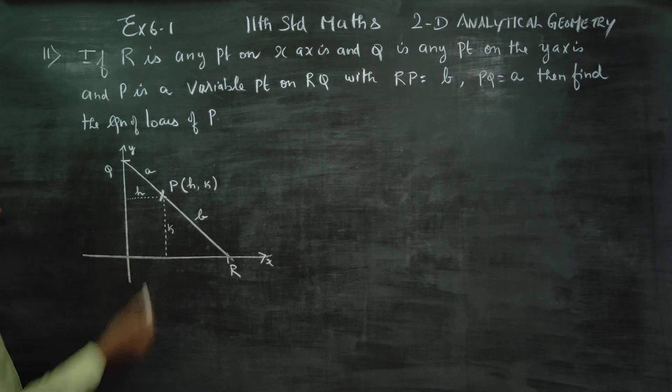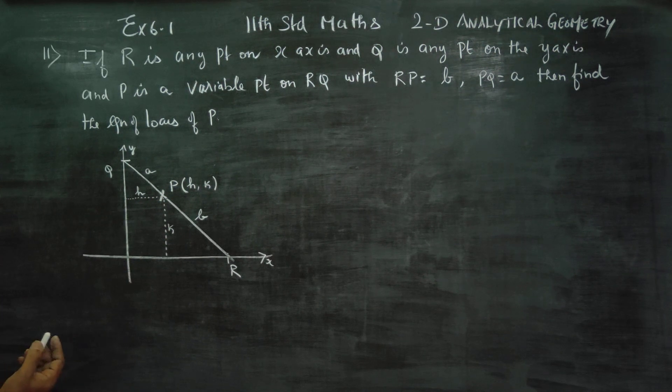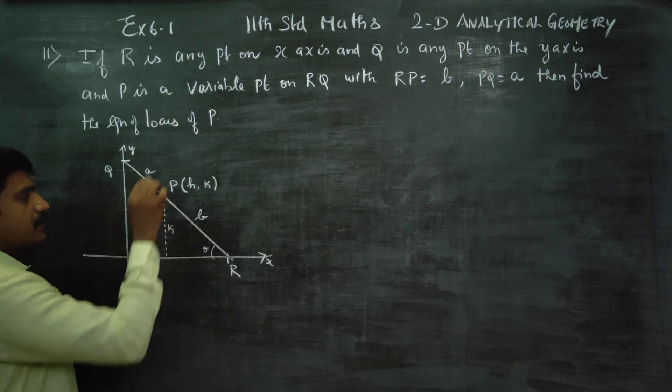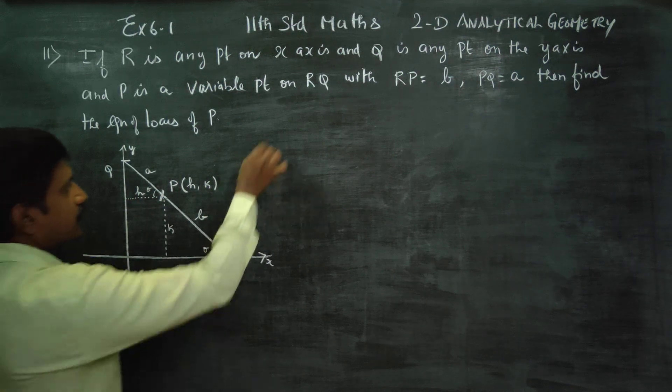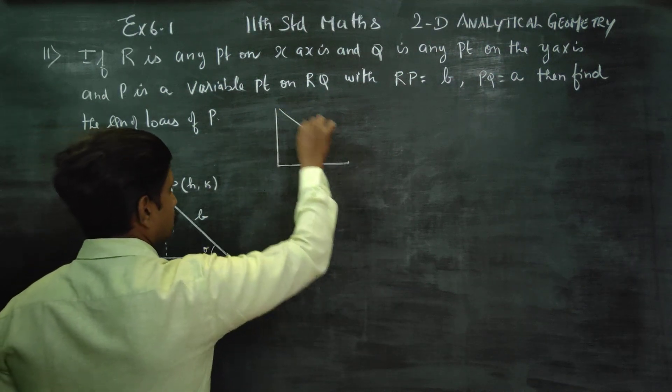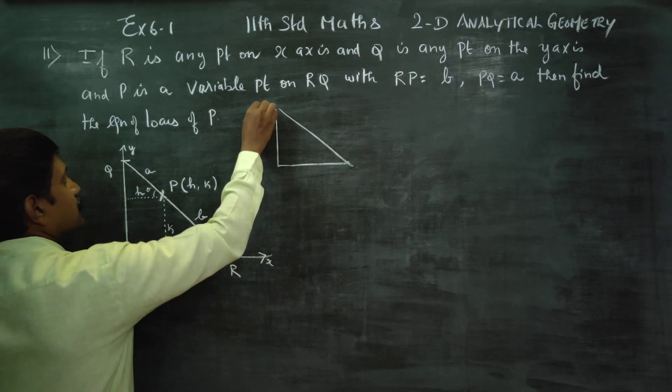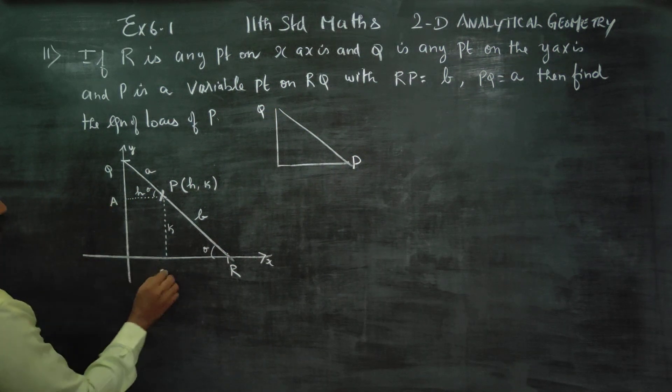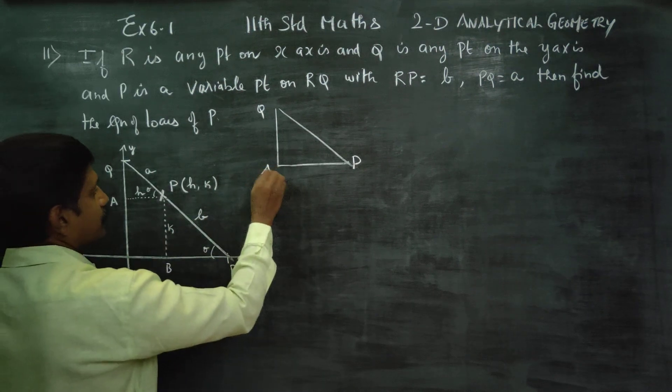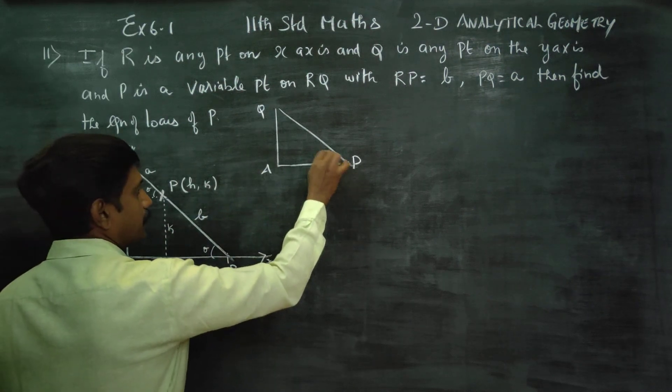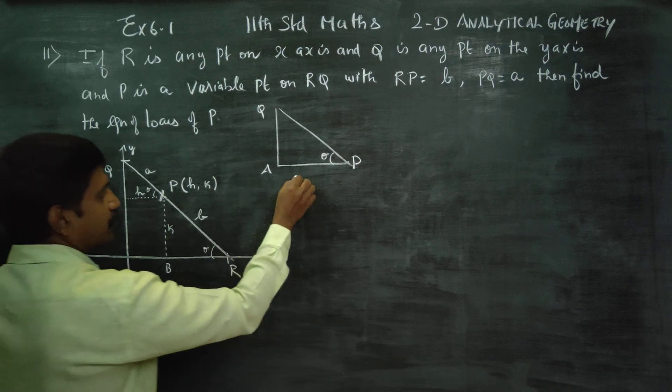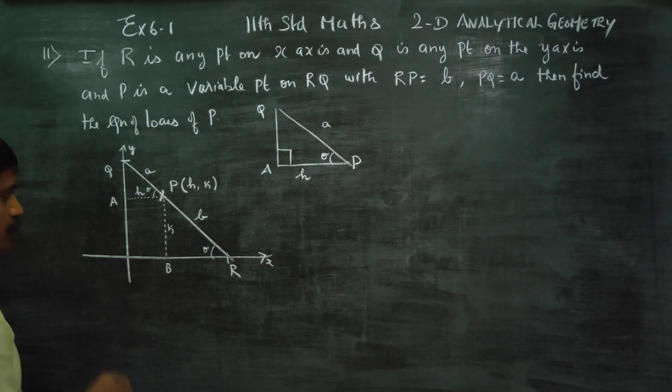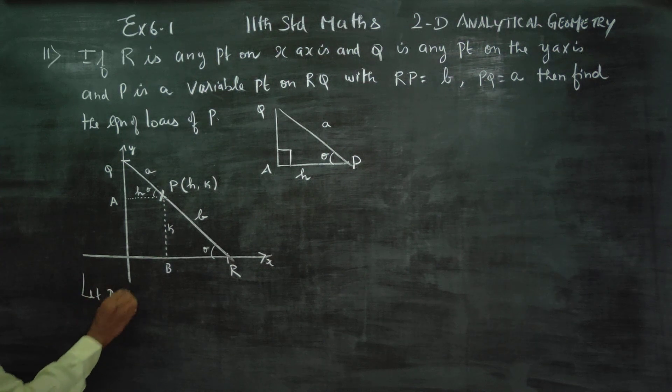If you set up the diagram, you will get an angle theta. This is my theta, right? First, a right angle triangle. Mark the points Q and P, with measurements A and B and angle theta. Let P(H, K) be the moving point.